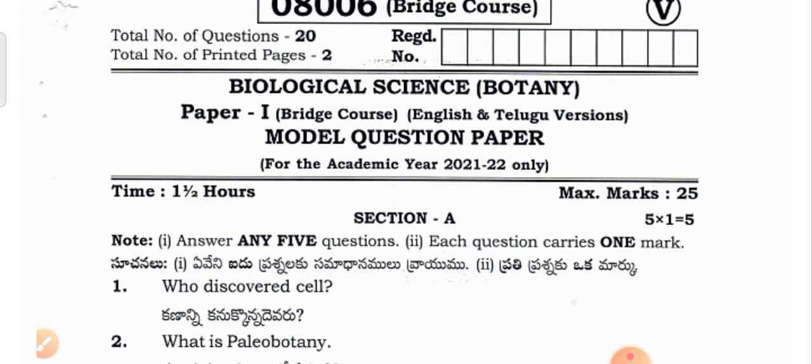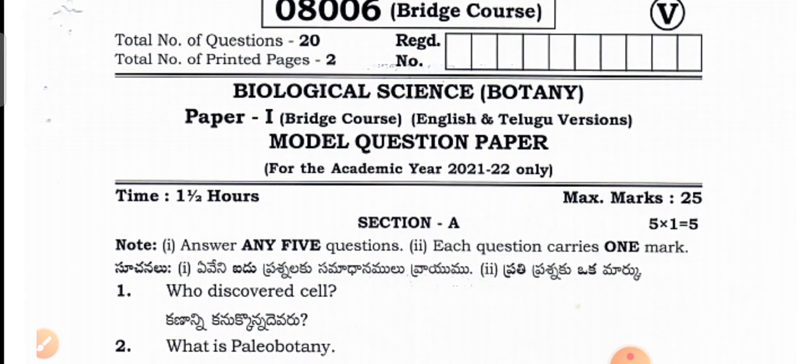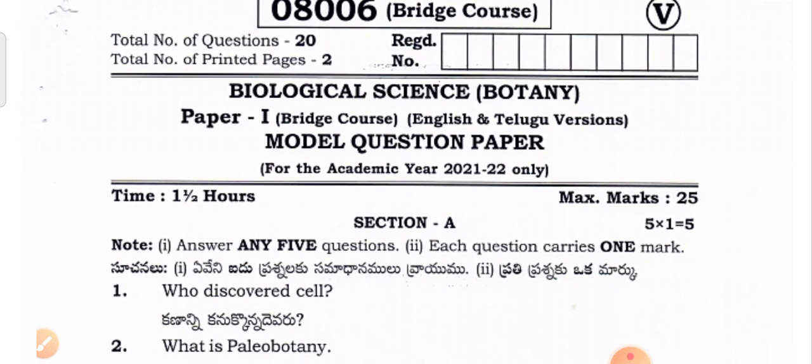The subjects include botany, geology, physics, chemistry, and physical sciences. Botany and geology combined make the biological sciences paper, and physics and chemistry make the physical sciences paper.